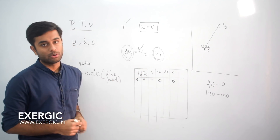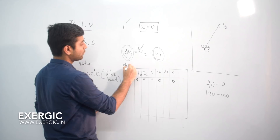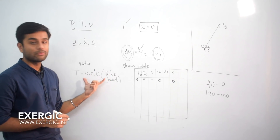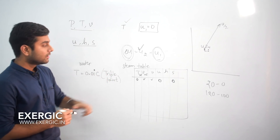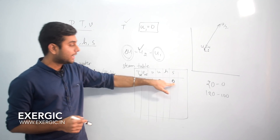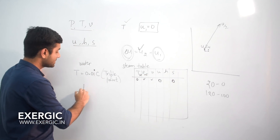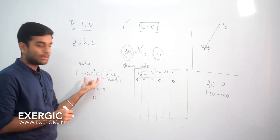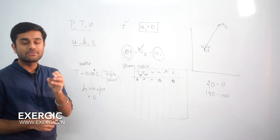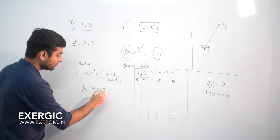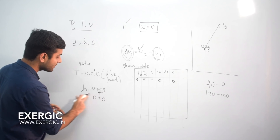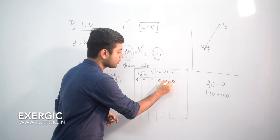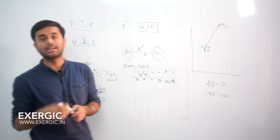This table is called a steam table for water. The base of the steam table is the triple point of water, 0.01°C. Internal energy is assigned 0, entropy is assigned 0, and enthalpy equals U + PV. Since U is 0 and at this temperature the specific volume is very small and pressure is also very small, the PV term is nearly 0 — hence H is almost 0 as well. It will have a very small value, but you can take it as 0.